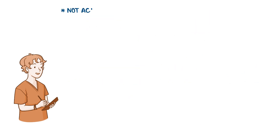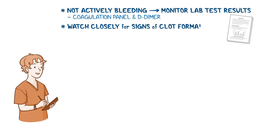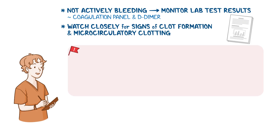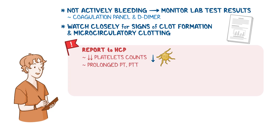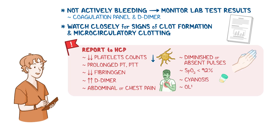If your client is not actively bleeding, monitor your client's laboratory test results, including coagulation panel and D-dimer. Watch them closely for signs of clot formation and microcirculatory clotting. Immediately report decreased platelet counts, prolonged PT or PTT, decreased fibrinogen, or elevated D-dimer, as well as manifestations of tissue ischemia, including abdominal or chest pain, diminished or absent pulses, SpO2 less than 92%, cyanosis of the fingers and toes, or oliguria.